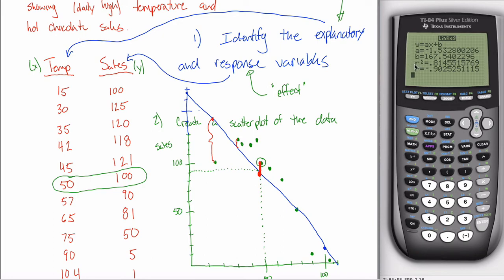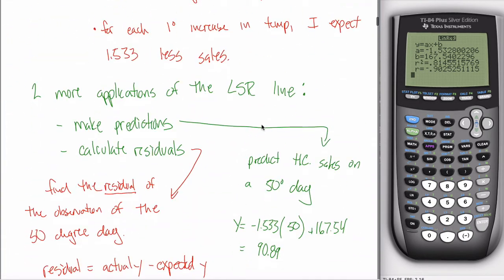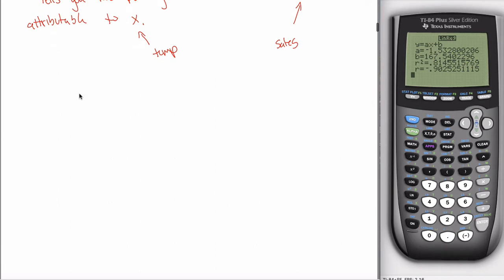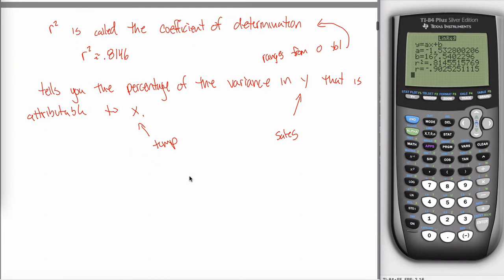I'd like you to know the name of r-squared — the coefficient of determination — and what it means. Informally it's a measure of goodness of fit, but more formally I want you to say it tells you the percentage of the variance in your Y variable, whatever your response variable is, that is attributable to X, the explanatory variable. That's the last major topic about LSR lines, and it's a good point for me to go through what I want you to be able to do in Chapter 7 so far.